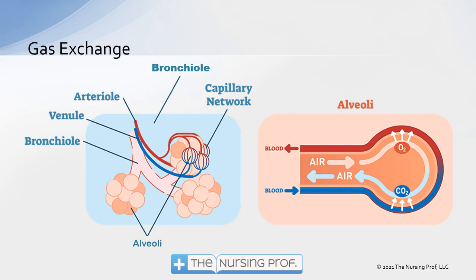It would be nice if we could know how much oxygen is getting across that alveolar capillary membrane and directly into the bloodstream, but that's going to be very hard to read. We can't stick something into the lung and find out how much oxygen has gotten into the bloodstream right there. So we have to take a surrogate, which is going to be our pulse ox.